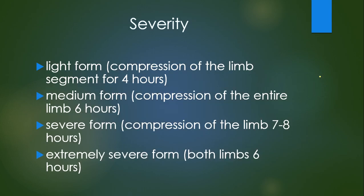We have four different stages of severity. It's light form: compression of the limb segment for four hours. Medium: compression of entire limb for six hours. Severe form: compression of the limb for seven or eight hours. And extremely severe form: both limbs more than six hours.